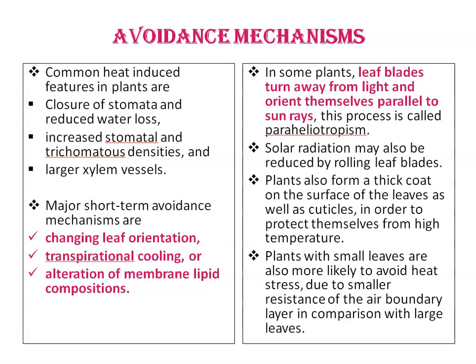Solar radiation may also be reduced by rolling leaf blades. Plants also form a thick waxy coat on the surface of the leaves as well as cuticles in order to protect themselves from high temperature. Plants with small leaves are also more likely to avoid heat stress due to smaller resistance to the air boundary layer in comparison with larger leaves.